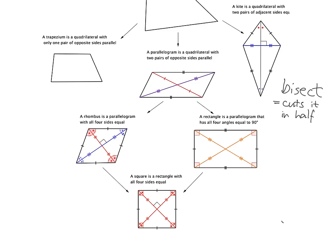What about a rhombus? Well, a rhombus diagonals bisect each other, but the diagonals are not actually equal to each other. The other thing that happens with a rhombus is that the diagonals bisect the angles, and the diagonals bisect each other at 90 degrees. This will also be true for the square, because a square is a special kind of rhombus. So the diagonals of a square cut at 90 degrees, and each of these little angles here is going to be 45 degrees.